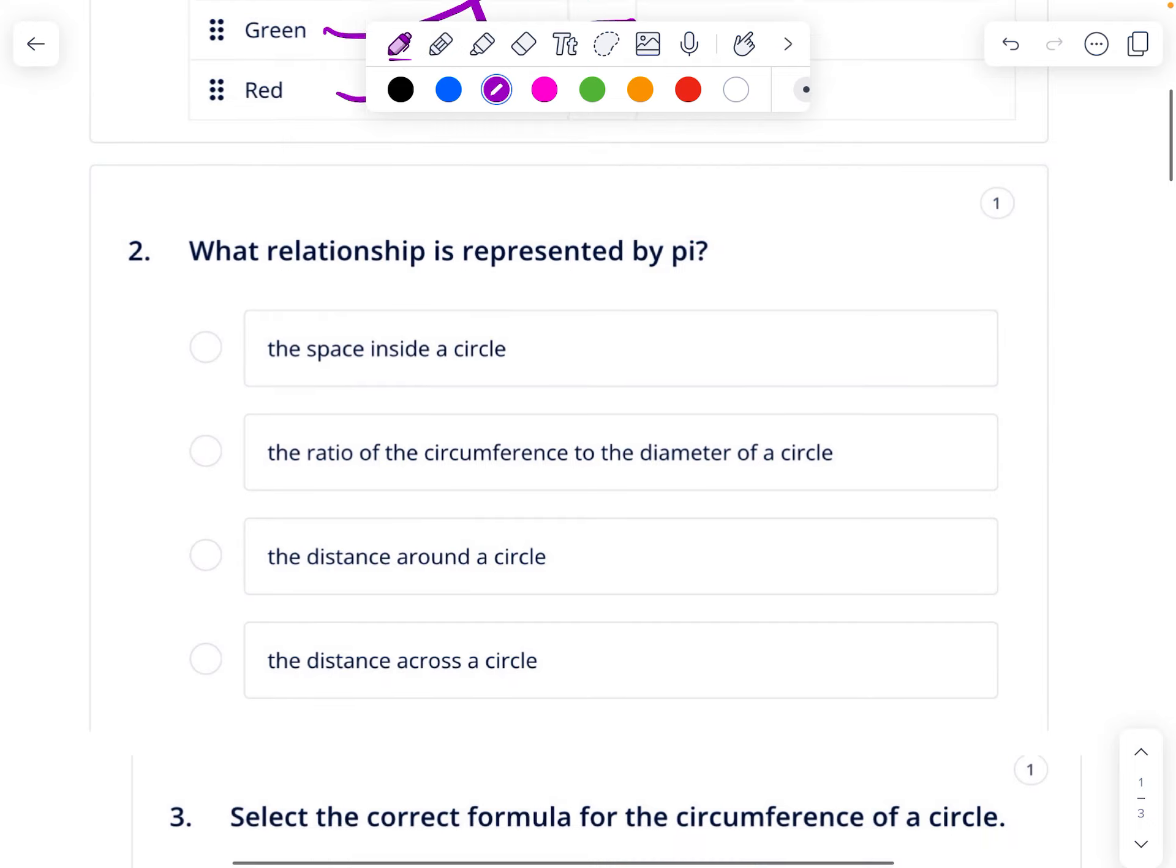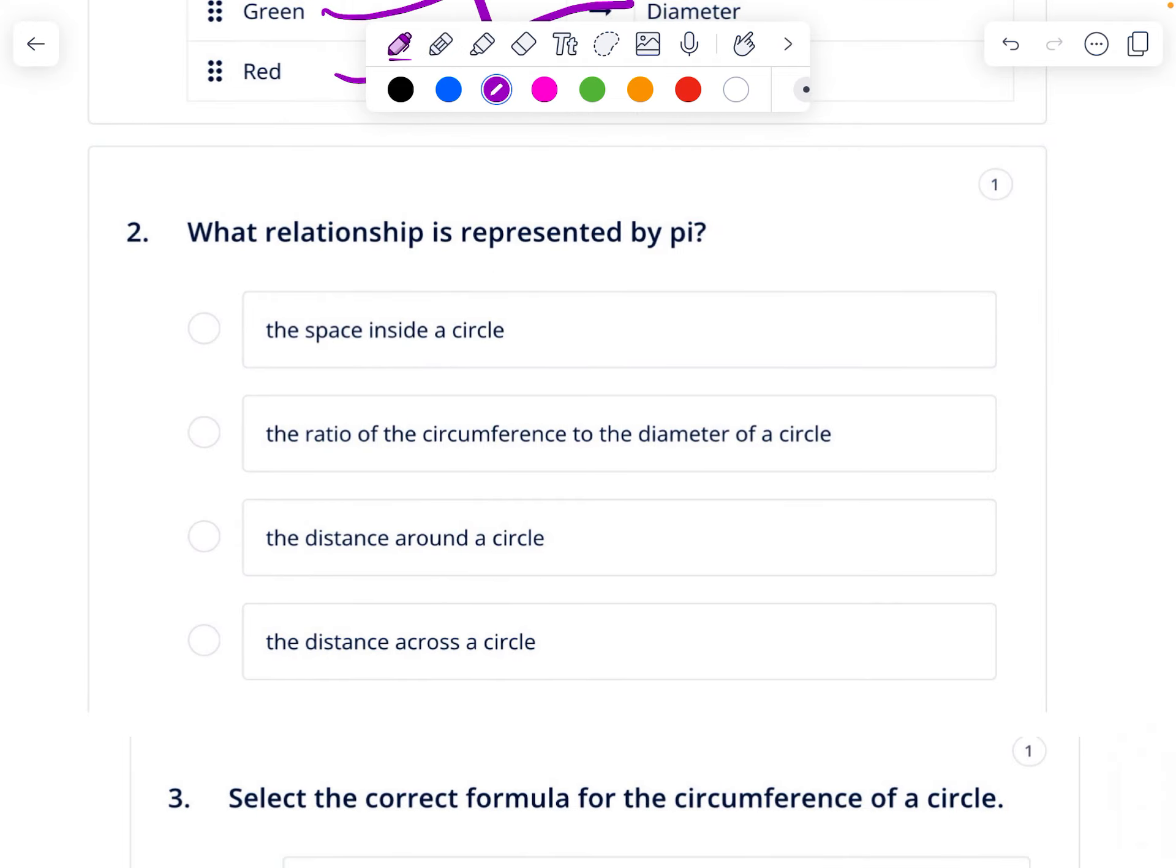Because we know that circumference equals pi times diameter, then if I divided both sides by the diameter, because of what we've learned about solving equations, pi is equal to the circumference divided by the diameter. So when I look at these choices, the ratio of the circumference to the diameter of the circle is what pi is.